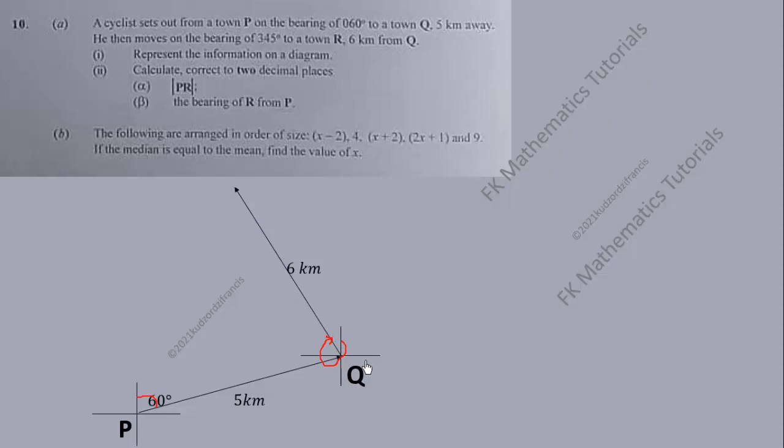So this is now town R. The cyclist is now here. We have now got all the information, so it means we can connect R and P like this. This is all the information we have. Let's see whether we can use it to calculate PR and the bearing of R from P.